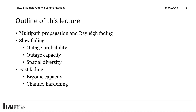Welcome to lecture number 3 in multiple antenna communications at Linköping University. This lecture will be dedicated to multipath propagation and Rayleigh fading. We will look at two categories of fading channels: slow fading, where we will discuss outage probability, outage capacity, and spatial diversity; and fast fading, where we will introduce the concept of ergodic capacity and channel hardening.